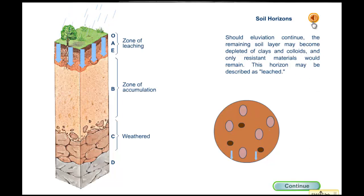Should eluviation continue, the remaining soil layer may become depleted of clays and colloids, and only resistant materials would remain. This horizon may be described as leached.